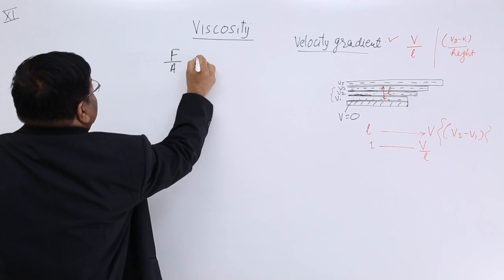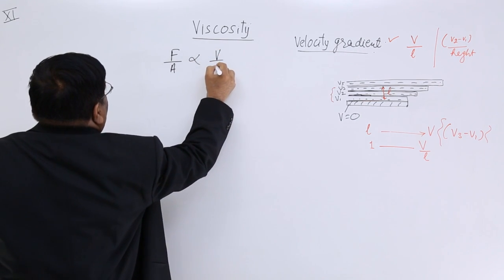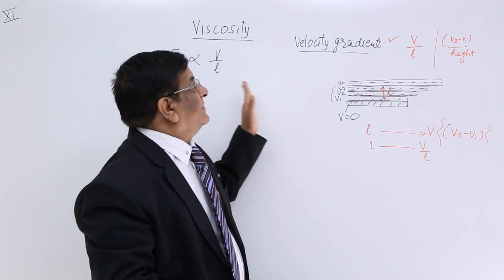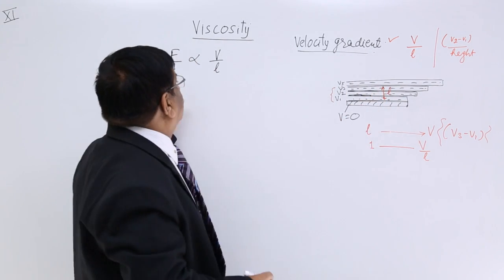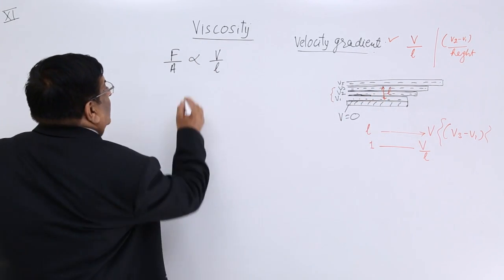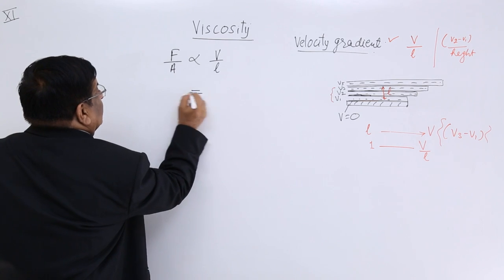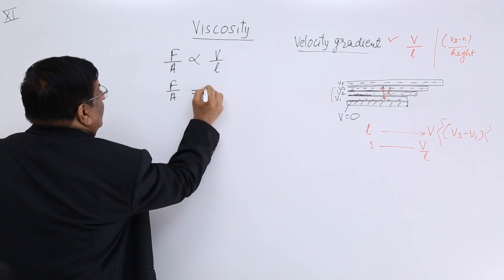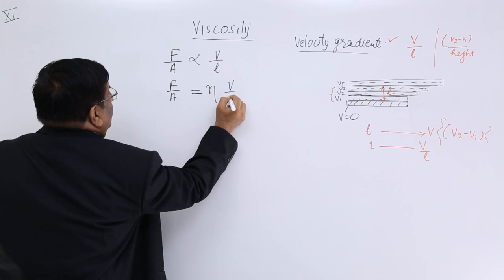And this can be written as force upon area, pressure. This is proportionate to velocity gradient. If velocity gradient is large, that means the force applied is large. This relation.